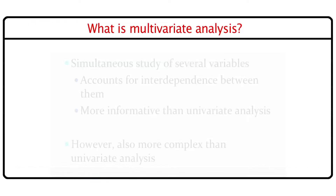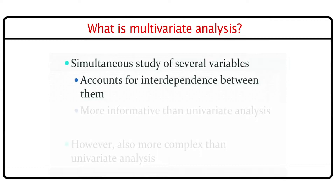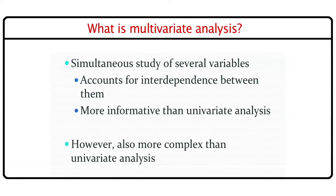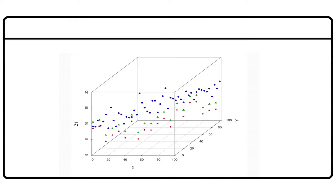Specifically, we'll be looking at three different topics which we'll elaborate as we do this lecture. Let us first look at some visualization of multivariate data. Unlike univariate or even bivariate data, which can be plotted either on a single line for univariate data or on a two-dimensional plane in the case of bivariate data, visualizing multivariate data is difficult. As you can see from this figure, even for three variables, we can probably get a three-dimensional plot, but we do not get a very clear-cut idea as to how the observations lie.